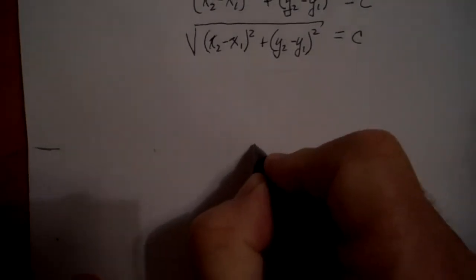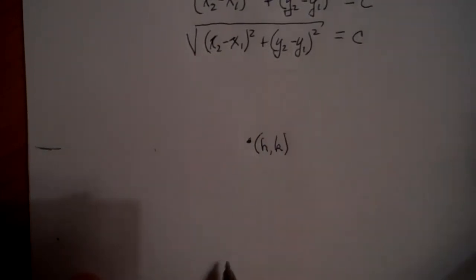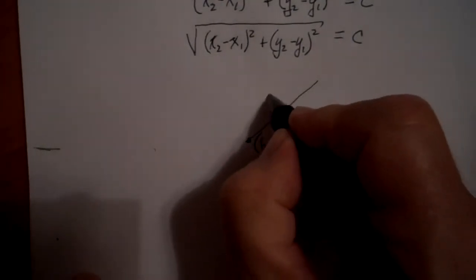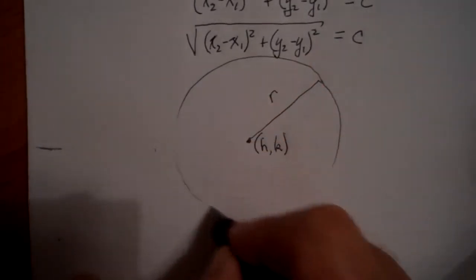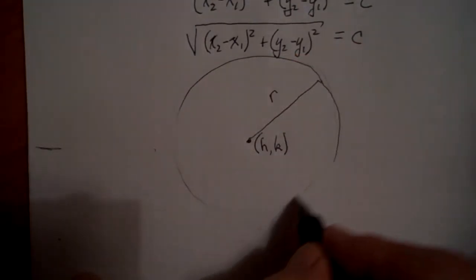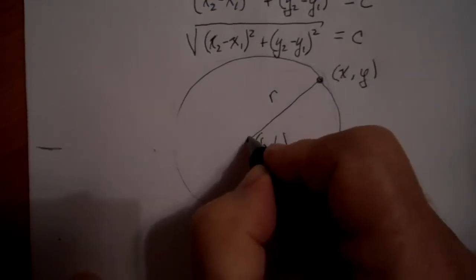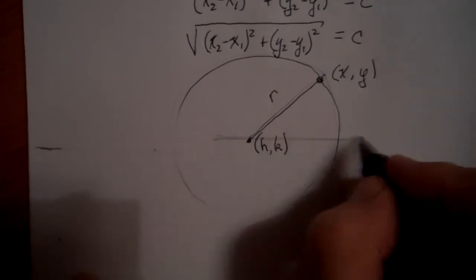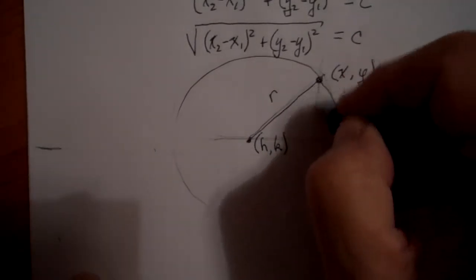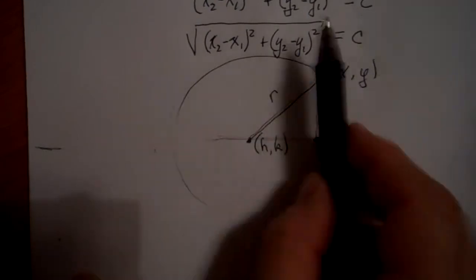Let's look at one more application. Suppose we're thinking about a circle centered at some point (h, k) with radius r. For any point (x, y) on this circle, there's going to be a radius from the center out to that point. We can draw a line parallel to the x-axis and a line parallel to the y-axis, creating an intersection point and forming a right triangle.